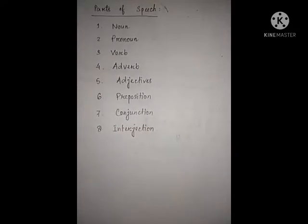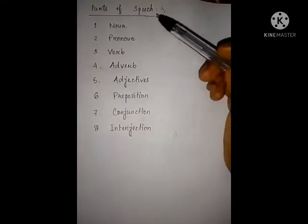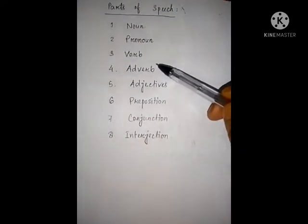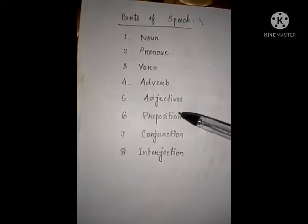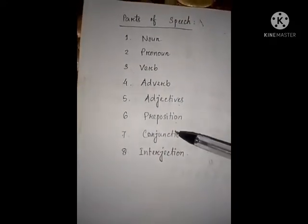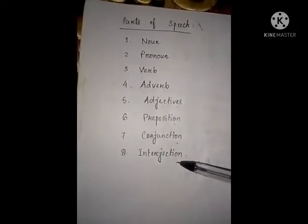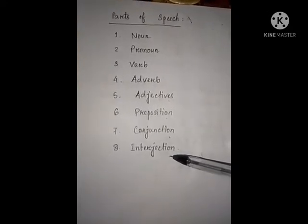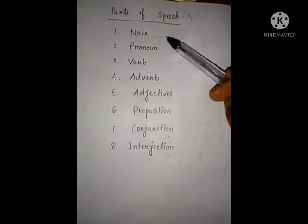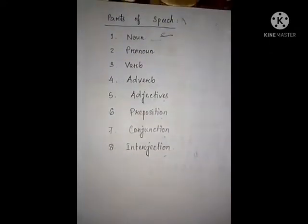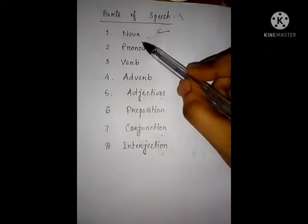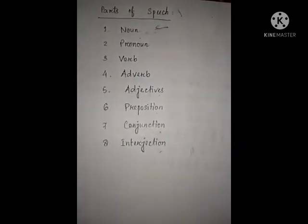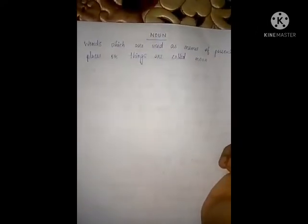What are the parts of speech? The fourth chapter from your English grammar is about noun — about the first part of speech. What is noun?